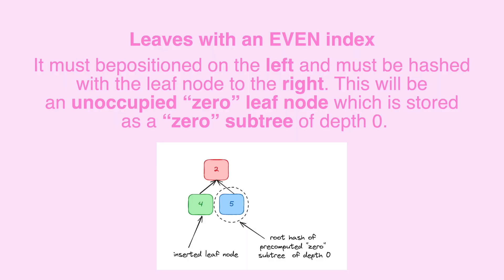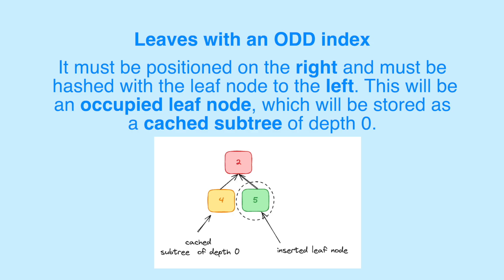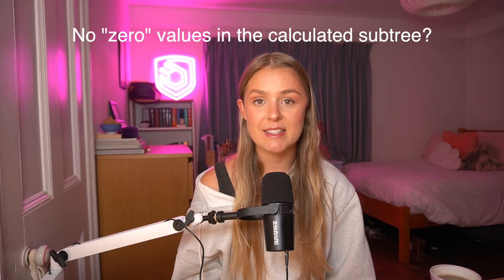When adding a leaf with an even index, it must be positioned on the left of the hash operation and hashed with the leaf node on the right — which will be an unoccupied zero value leaf node, stored as a zero subtree of depth zero. If the leaf has an odd index, it must be positioned on the right and hashed with the leaf node on the left — which will be an occupied leaf node stored as a cached subtree of depth zero. The same logic applies when updating intermediate nodes: check the index to determine left/right position and whether to use a cached or zero subtree. If the resulting intermediate node contains no zero values in its subtree, it must be cached and stored in the smart contract.